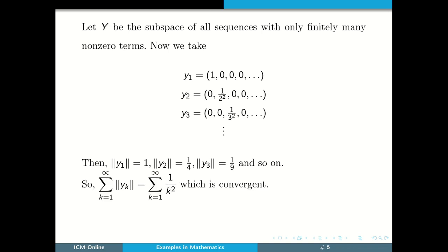So, summation k equals 1 to infinity norm of yk, which is same as summation k equals 1 to infinity 1 by k square, is convergent. That is, sigma k equals 1 to infinity yk is absolutely convergent by the definition.